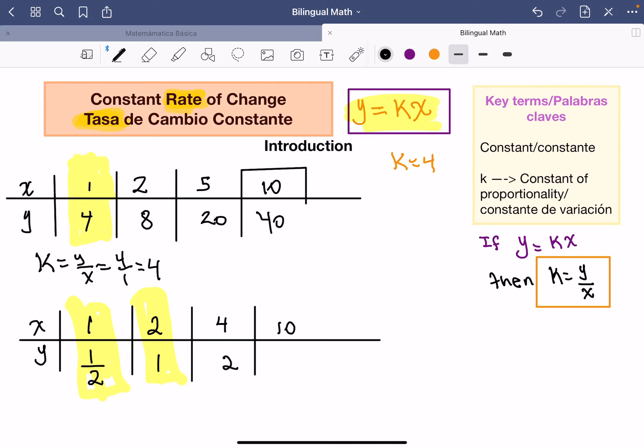Lo que hice aquí es bien fácil. Estoy tratando de encontrar la k. La k es la constante de variación. ¿Cómo obtengo? Dice aquí, quiero saber cuánto equivale k de tal forma que cuando multiplico por x, me va a dar el valor de la y.